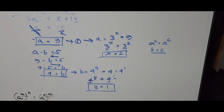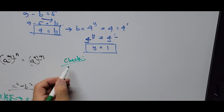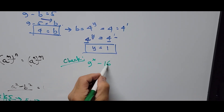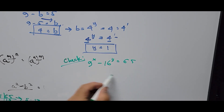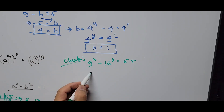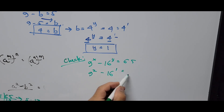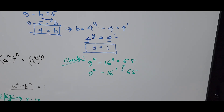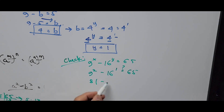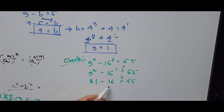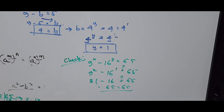To check our answer, we substitute X equals 2 and Y equals 1 back into the original equation: 9 to the power of 2 minus 16 to the power of 1. That gives 9 squared minus 16, which is 81 minus 16, equals 65. So 65 equals 65 — this confirms that X equals 2 and Y equals 1 are correct.